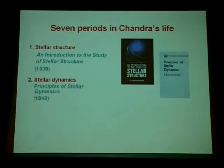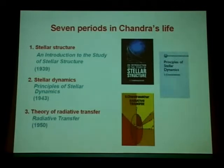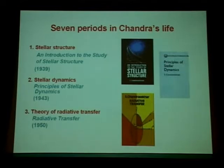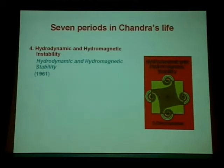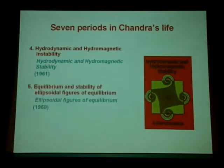Then stellar dynamics followed in the early 40s — Principles of Stellar Dynamics, which is shown next. The third period around 1950 was the theory of radiative transfer, shown here on the right-hand side, followed in the beginning of the 60s by hydrodynamic and hydromagnetic instabilities, and the book shown on the right-hand side.